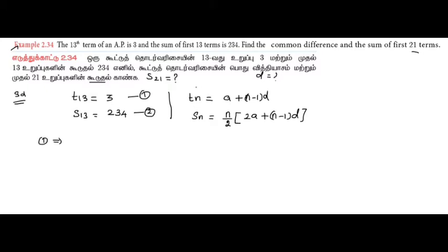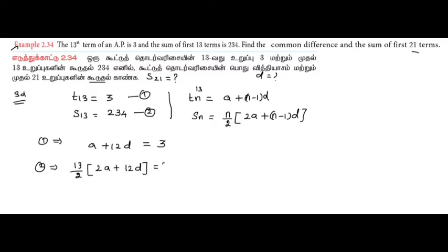This gives us equation 1: a plus 12d equals 3. The second equation is n by 2, so n is 13 divided by 2, into 2a plus 13 minus 1 into d, which is 12d, equal to 234. So 2a plus 12d.